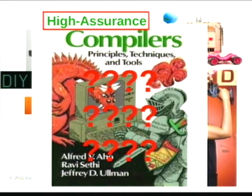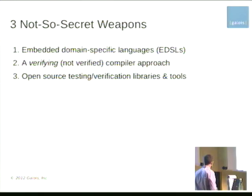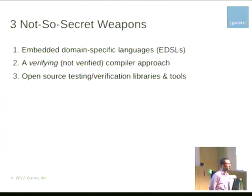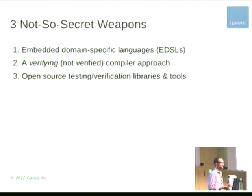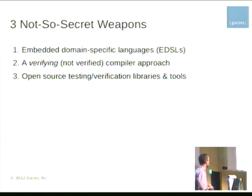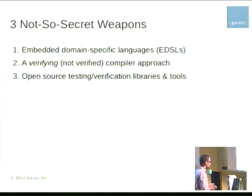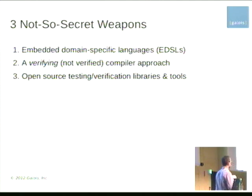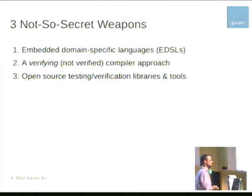I want to convince you that high-assurance compiler development is actually part of this DIY movement, or should be. There are three not-so-secret weapons this community contributes: first, using embedded domain-specific languages; second, building a verifying compiler rather than a verified compiler — one that gives evidence that each specific compilation was correct, as opposed to the CompCert approach of proving correctness once and for all; and third, building on open-source tools like QuickCheck, SMT solvers, and decision procedures.